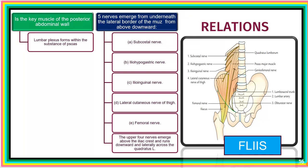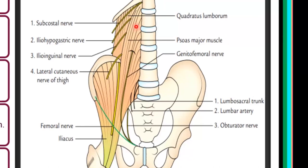Looking at more of the relations of psoas major, we note it as a key muscle of the posterior abdominal region for two reasons. First, the lumbar plexus forms within the substance of the psoas major. That means to get to the root of the lumbar plexus, we need to tear away a good part of the psoas major muscle. We'll see five nerves emerging from underneath this muscle at its lateral border — here is the psoas major with the lumbar plexus being formed within the muscle and branches exiting from its lateral border.